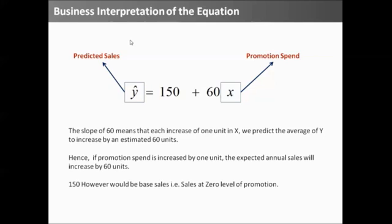So, that would be my base sales. And 60 would be incremental sales while I spend 1 unit of promotion. That is the business interpretation of the equation.